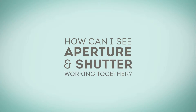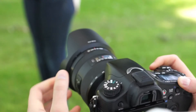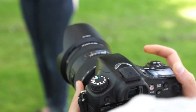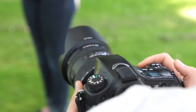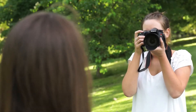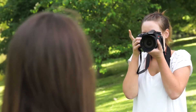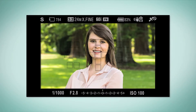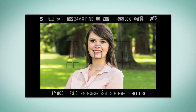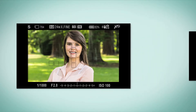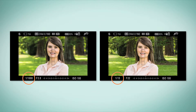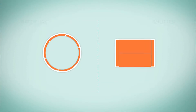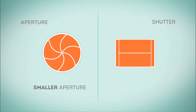So you may ask, how can I see the aperture and shutter working together? Grab your camera and try this. Set the camera to aperture priority. In this setting, we set the aperture and the camera will set the correct shutter speed to suit the lighting conditions. Here we begin with a large aperture of f2.8. Watch what the camera does to the shutter as we reduce the aperture to f22. As the aperture gets smaller, the light reduces and the camera chooses a slower shutter speed to compensate.